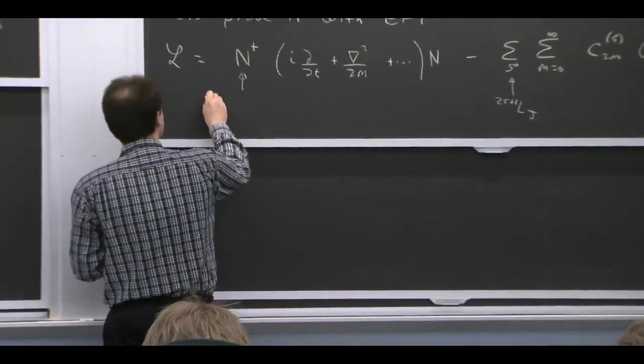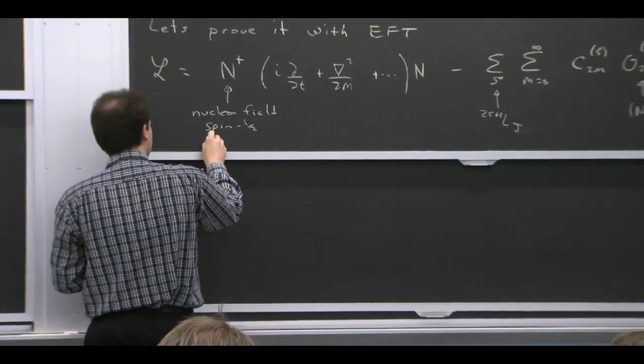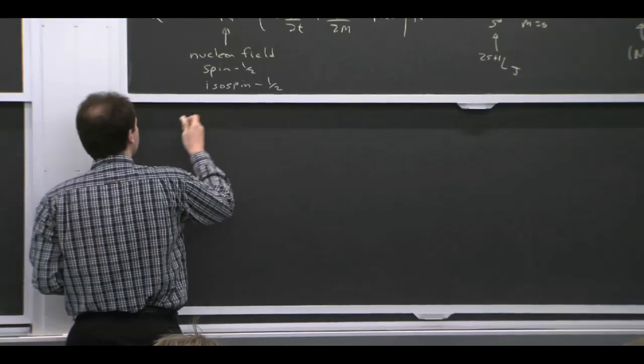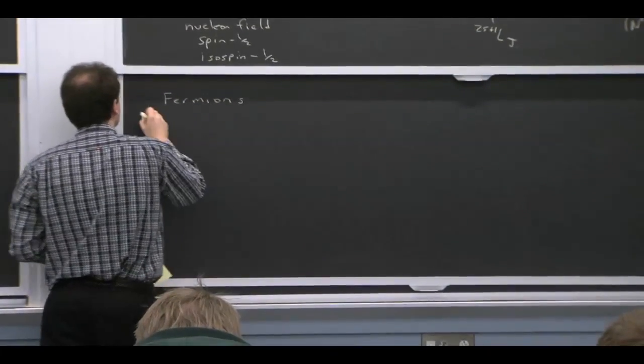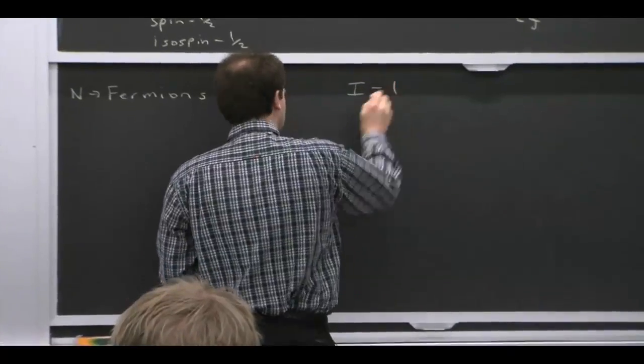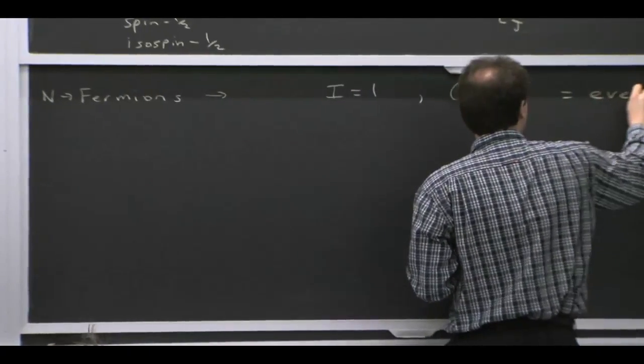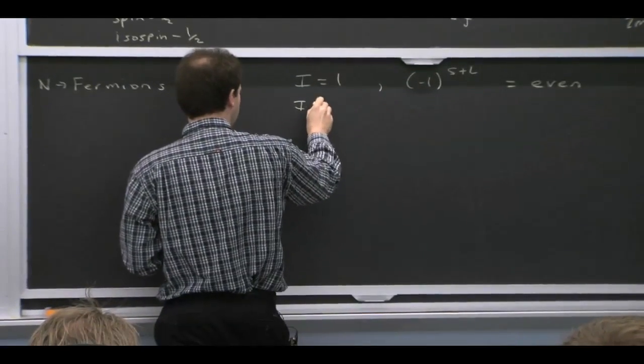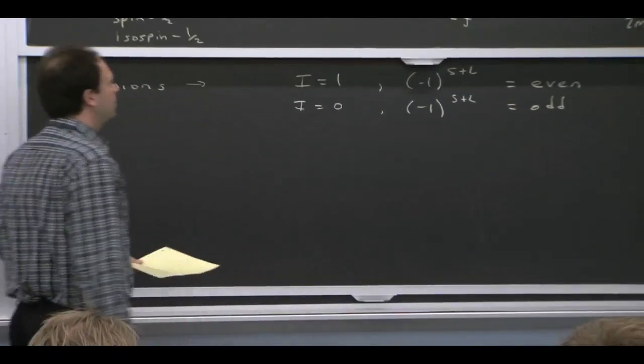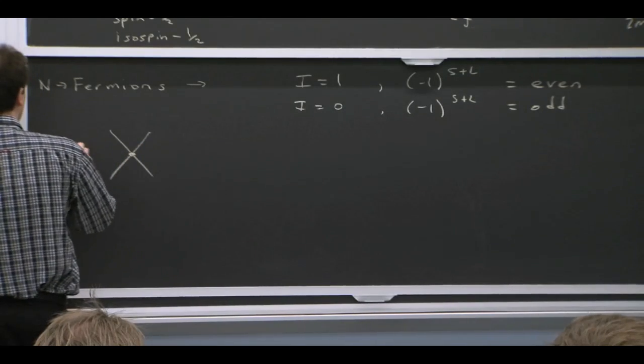And this nucleon field is spin 1 half. And it's isospin 1 half, too. So it includes both the proton and the neutron. Nucleons are fermions, and that implies actually a relation, because the wave function has to be anti-symmetric. And so actually, you know that you can associate isospin and the angular momentum in the following way, because of this fact. So all the isotriplets have minus 1 to the S plus L even, and the isosinglets have minus 1 to the S plus L odd. So that cuts down by a factor of 2, the number of combinations you have to consider.